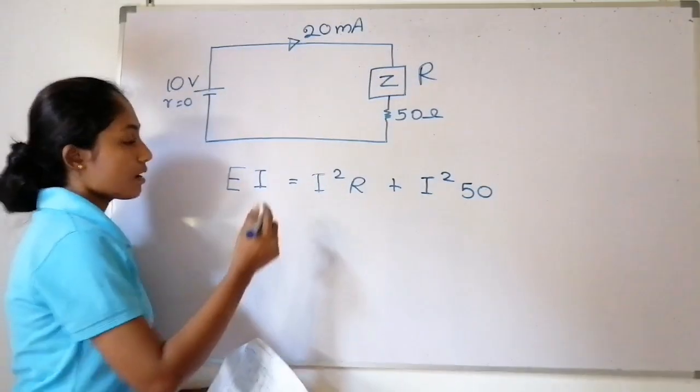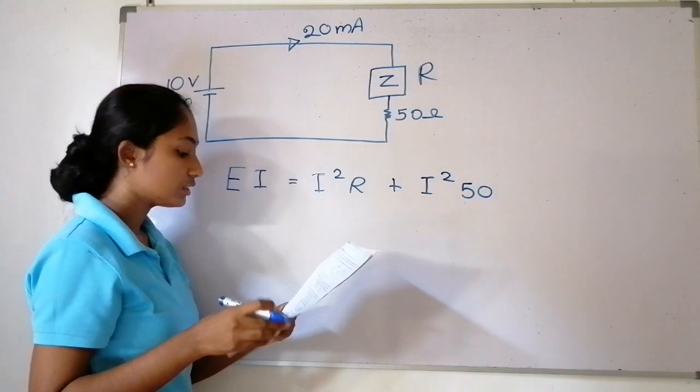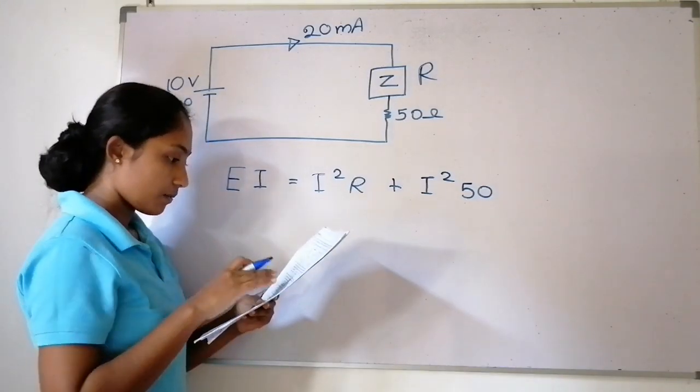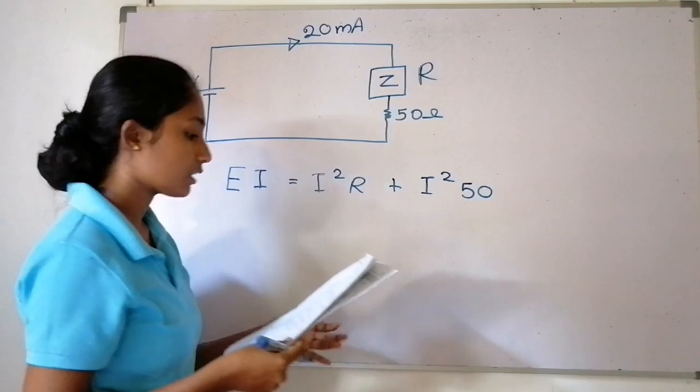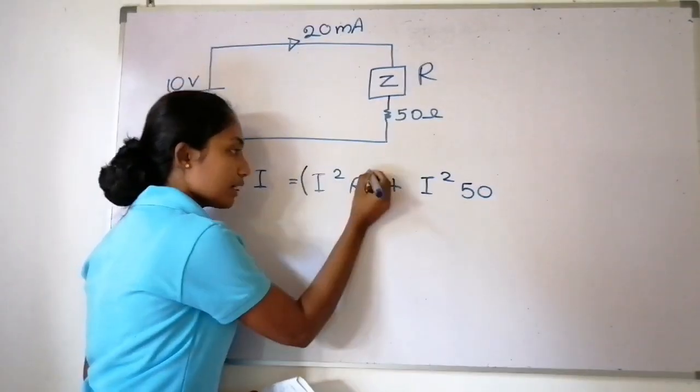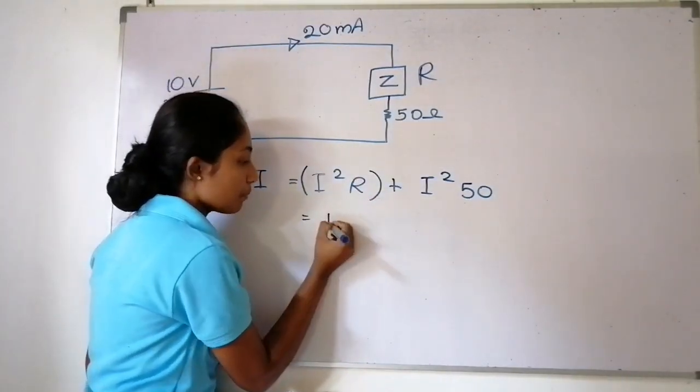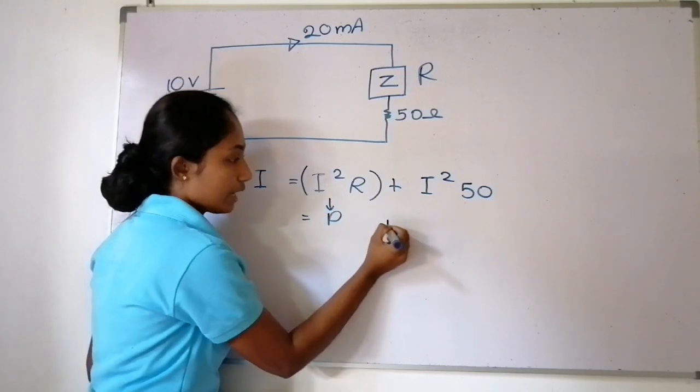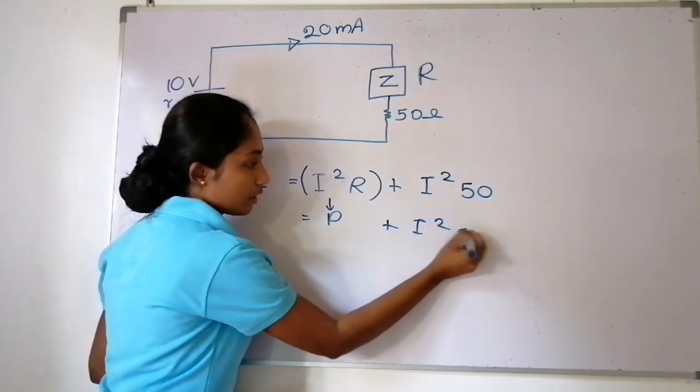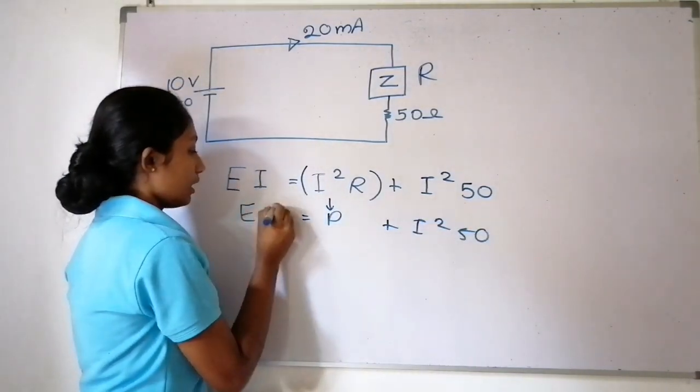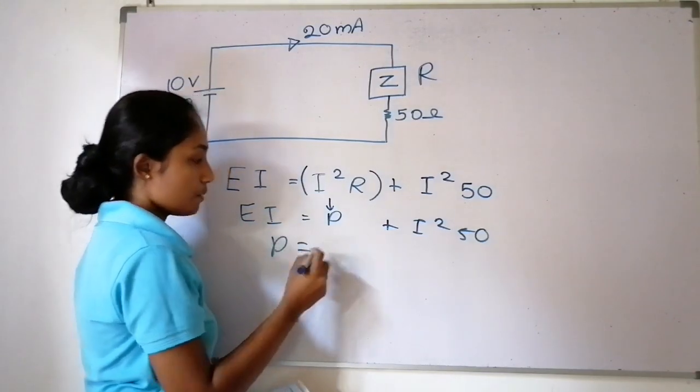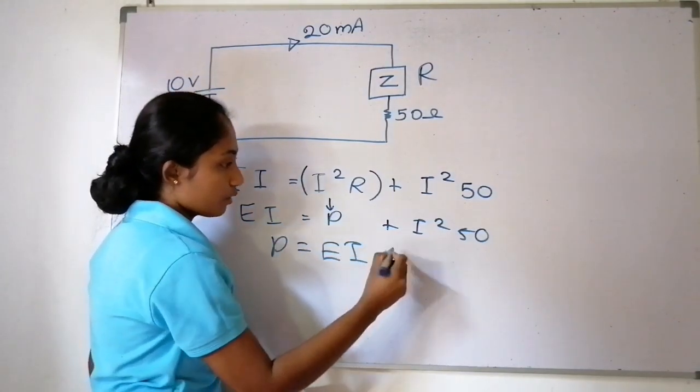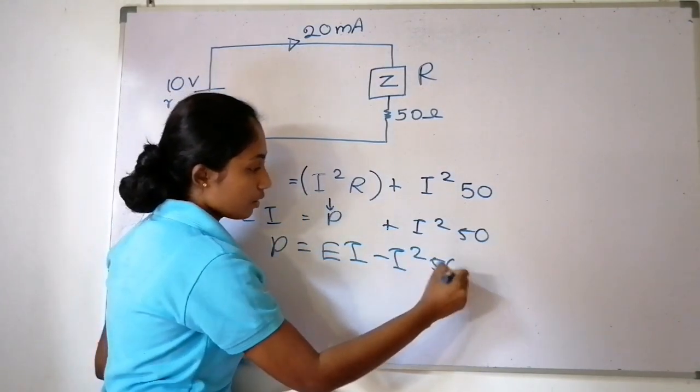The current is given as 20 milliamps. So we can write I equals 20 milliamps, which is 20 times 10 to the minus 3 amps.